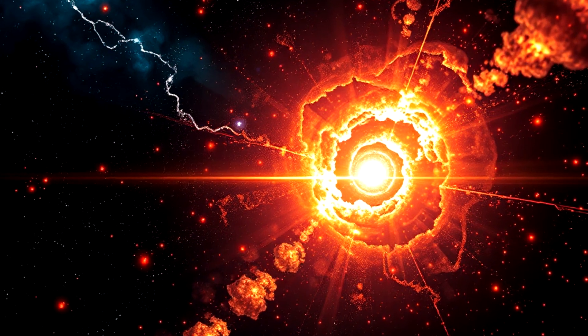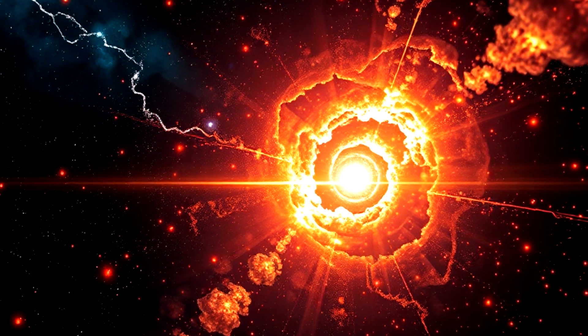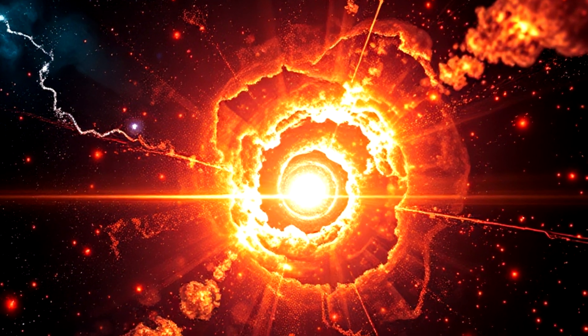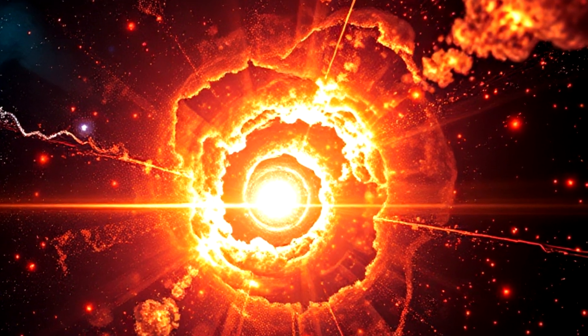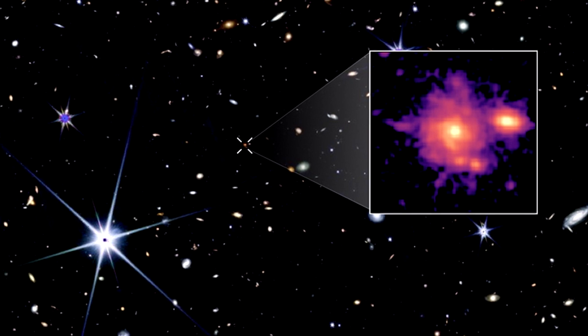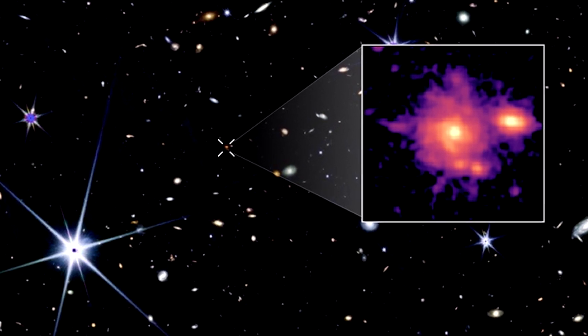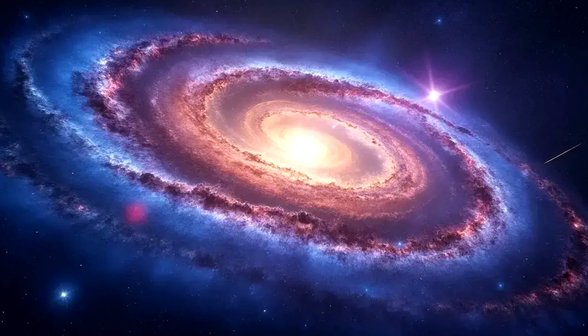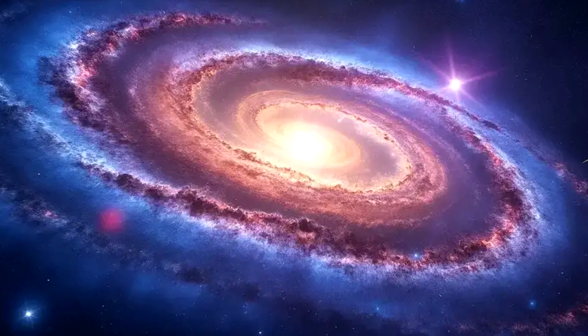It's what astronomers call a grand-designed spiral galaxy, a galaxy with two well-defined spiral arms that wind gracefully from its core. It's not a fuzzy blob or a random knot of stars. It's structured, balanced, and eerily familiar. But here's the twist. It's ancient.